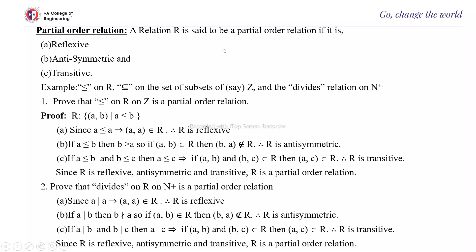Next is the partial order relation. The relation R is said to be a partial order relation if it is reflexive, anti-symmetric, and transitive. For equivalence relation, it has to be reflexive, symmetric, and transitive; whereas for partial order, it has to be reflexive, anti-symmetric, and transitive. Examples include: the less-than-or-equal-to relation on real numbers, the subset relation on subsets of Z, and the divides relation on N+.